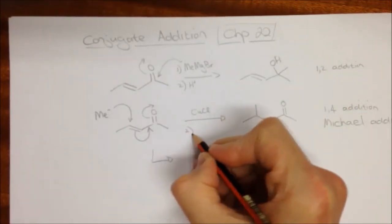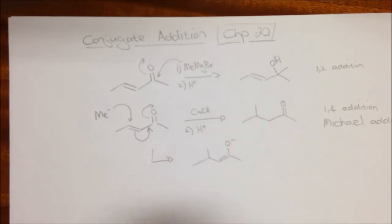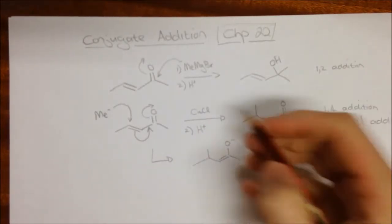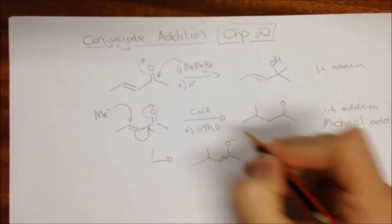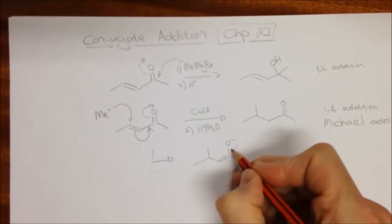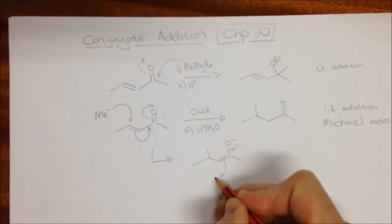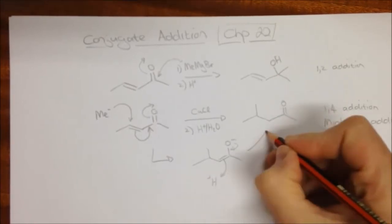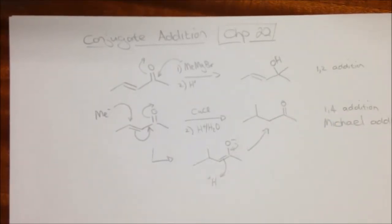So second step, when we're working it up with water, in acid, etc., then this enolate is going to collapse, pick up a proton, like so, and give us our product over there.